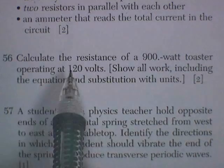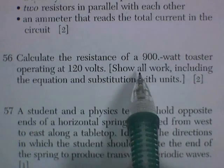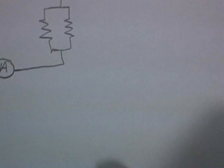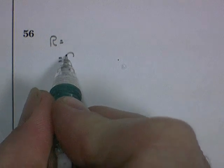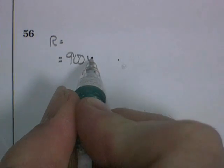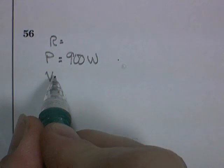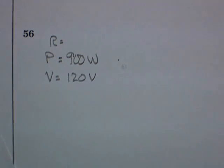Question 56. Calculate the resistance of a 900-watt toaster operating at 120 volts. Show all work, including equations and substitution with units, for two points. So let's see. 56. First thing we do is list our knowns. We know we're looking for resistance. It's a 900-watt toaster. That's the power of the toaster, 900 watts. And the voltage is 120 volts. Let's go see if we can't find a formula.